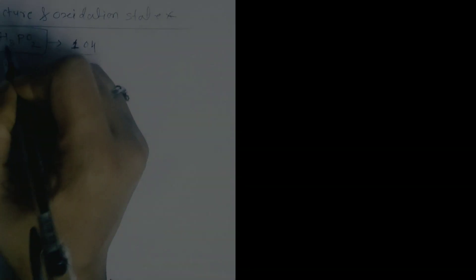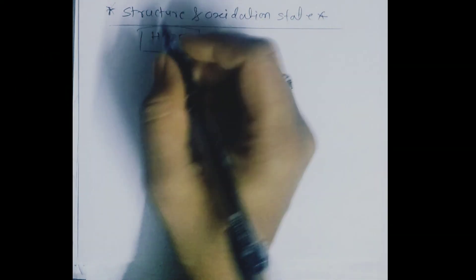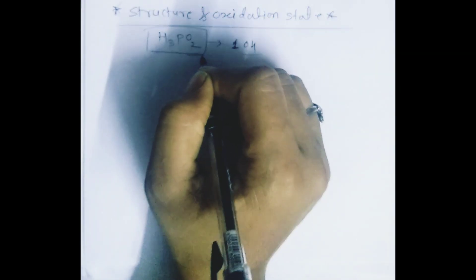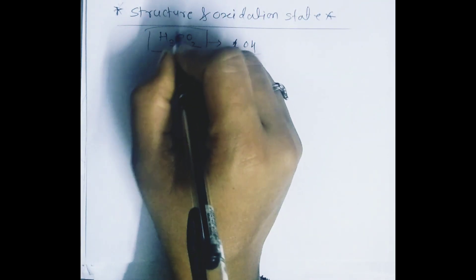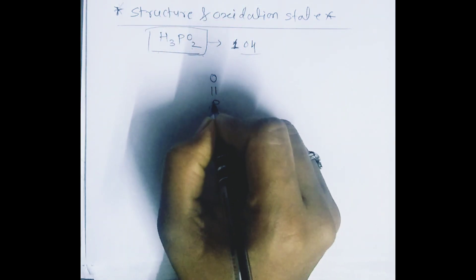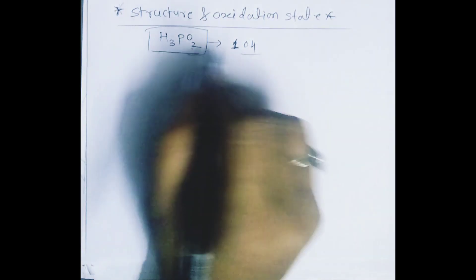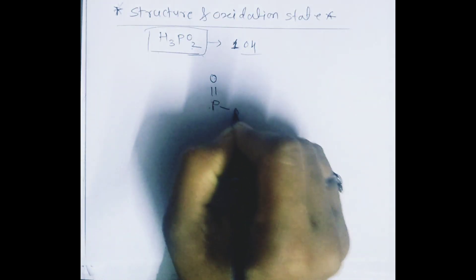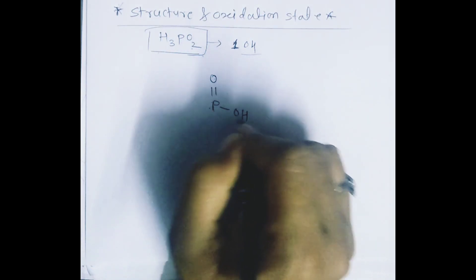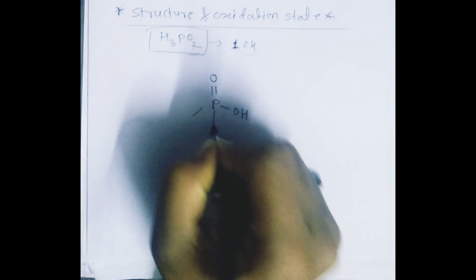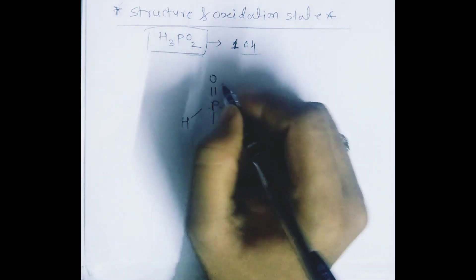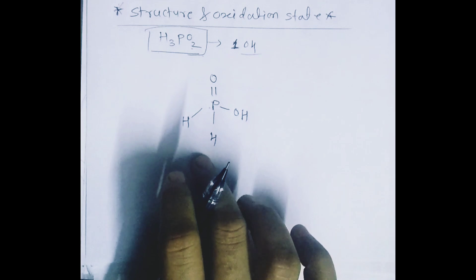The structure and oxidation state of H3PO2: in this compound, one hydrogen bonding is possible with phosphorus. The structure has phosphorus forming a double bond with an oxygen atom, one hydrogen bonding with oxygen-hydrogen, and the remaining two hydrogens bonded directly to phosphorus.